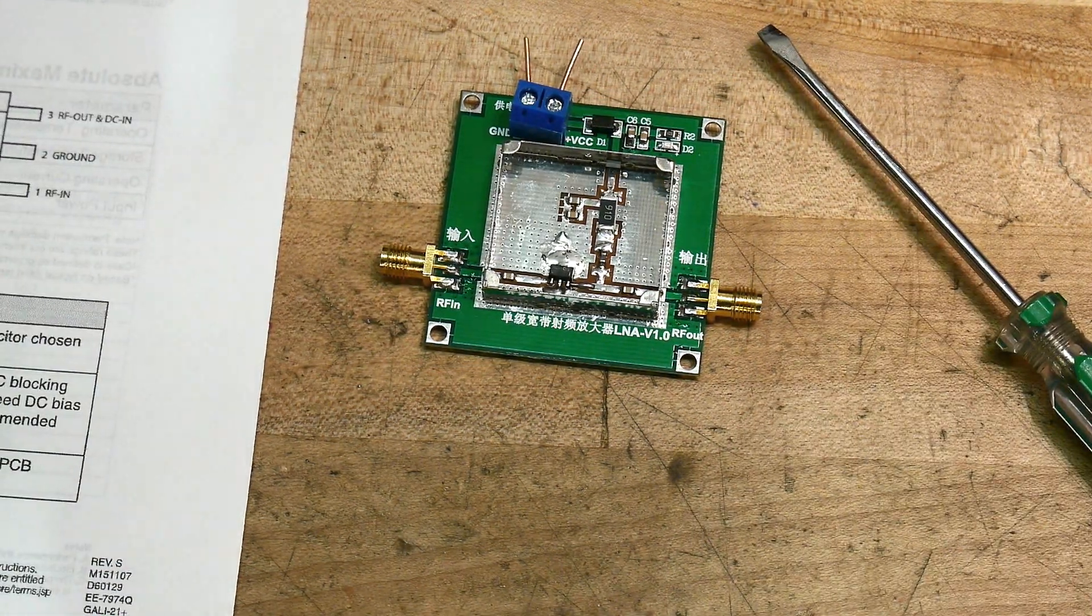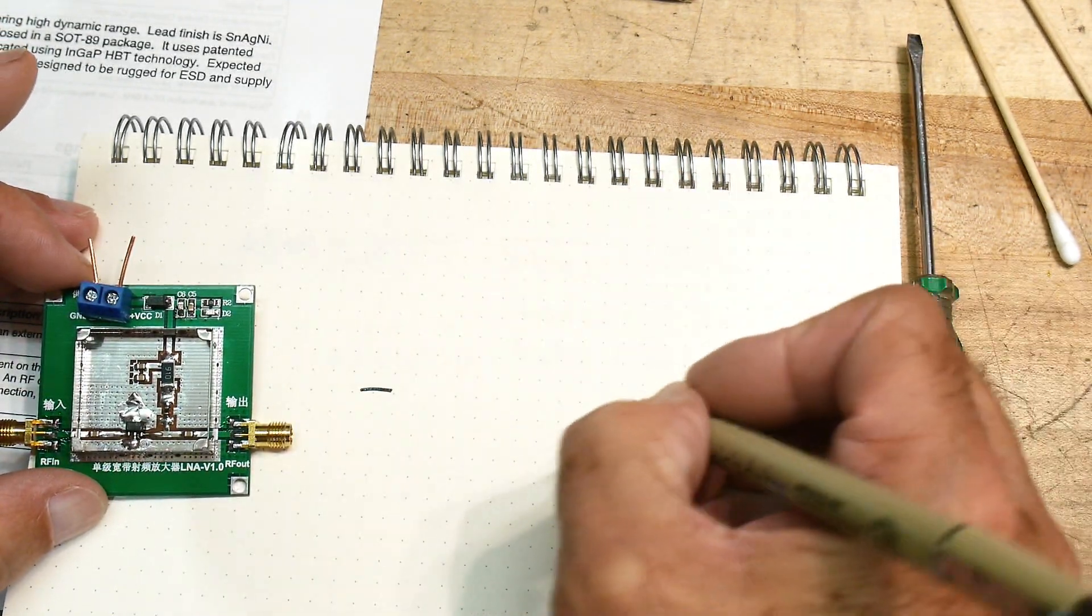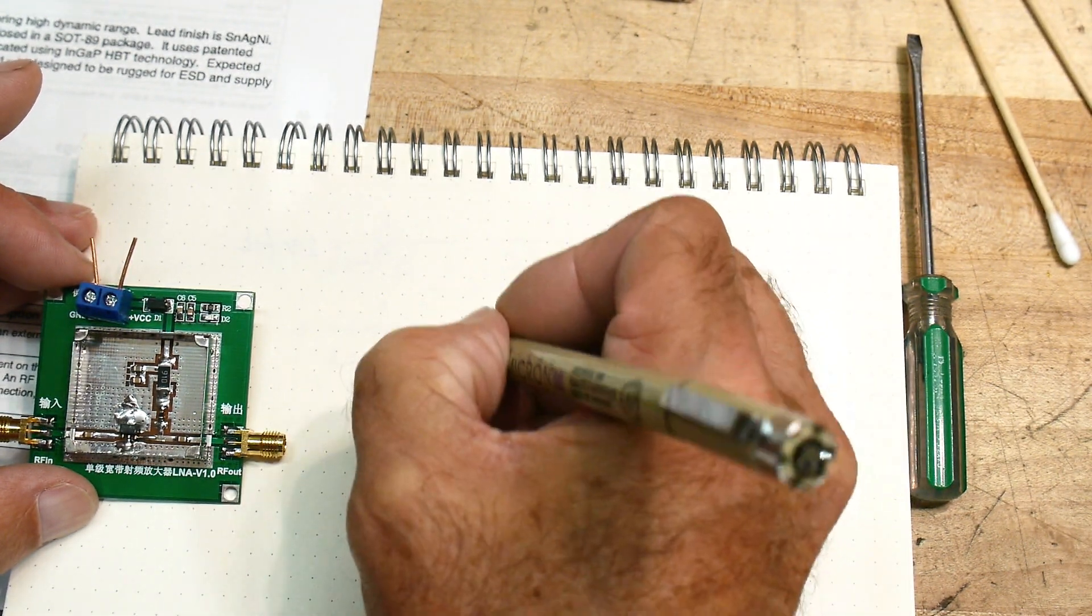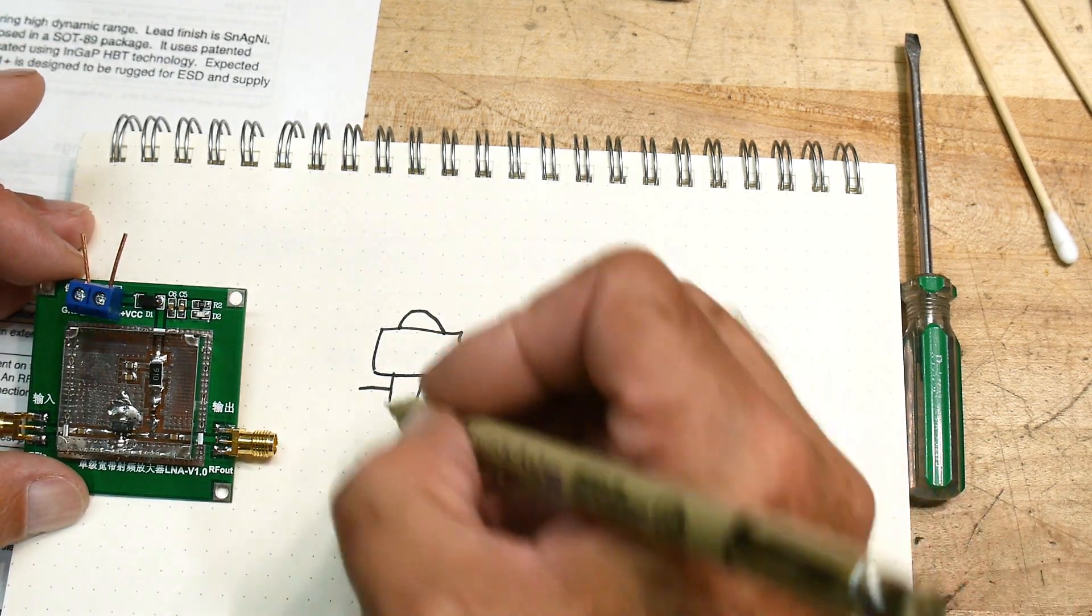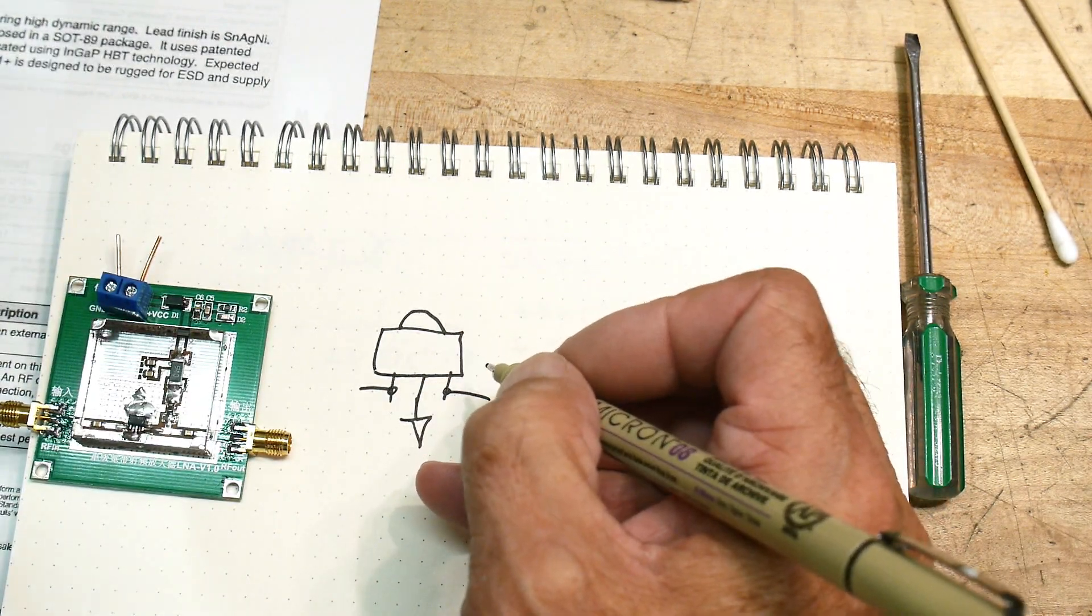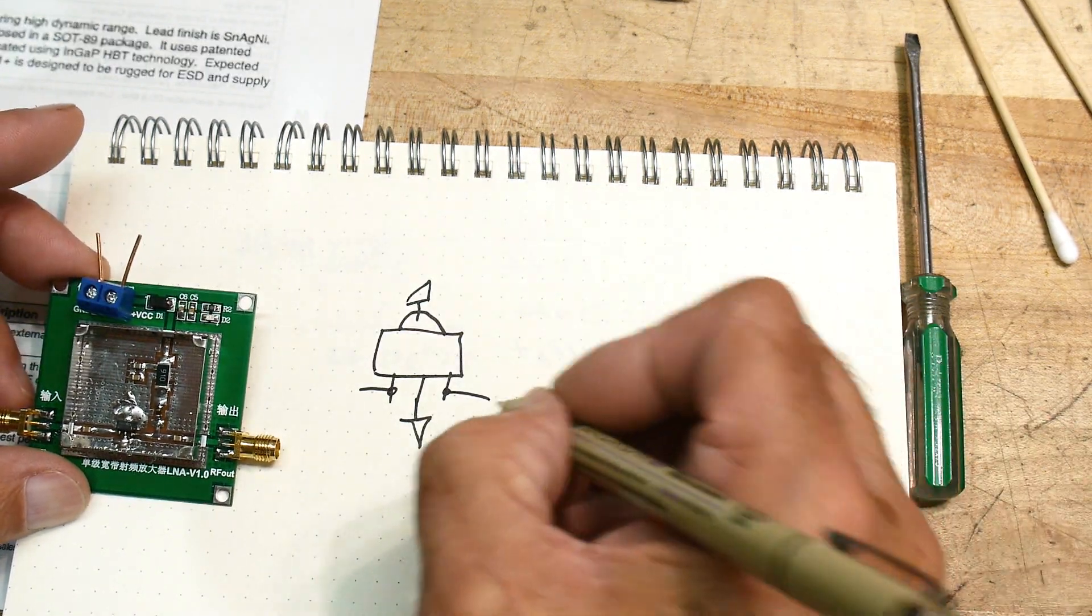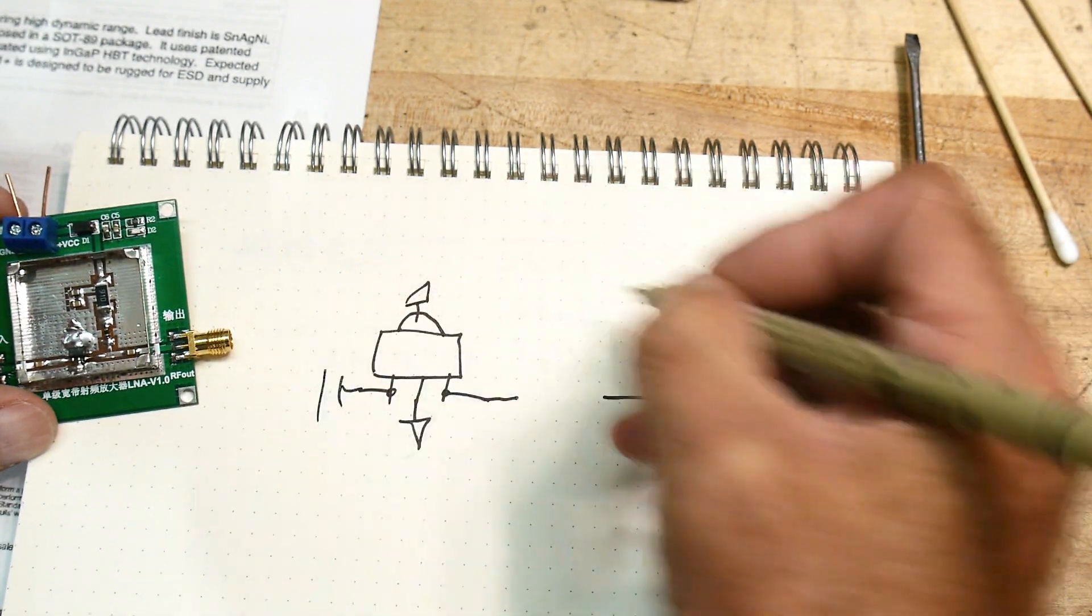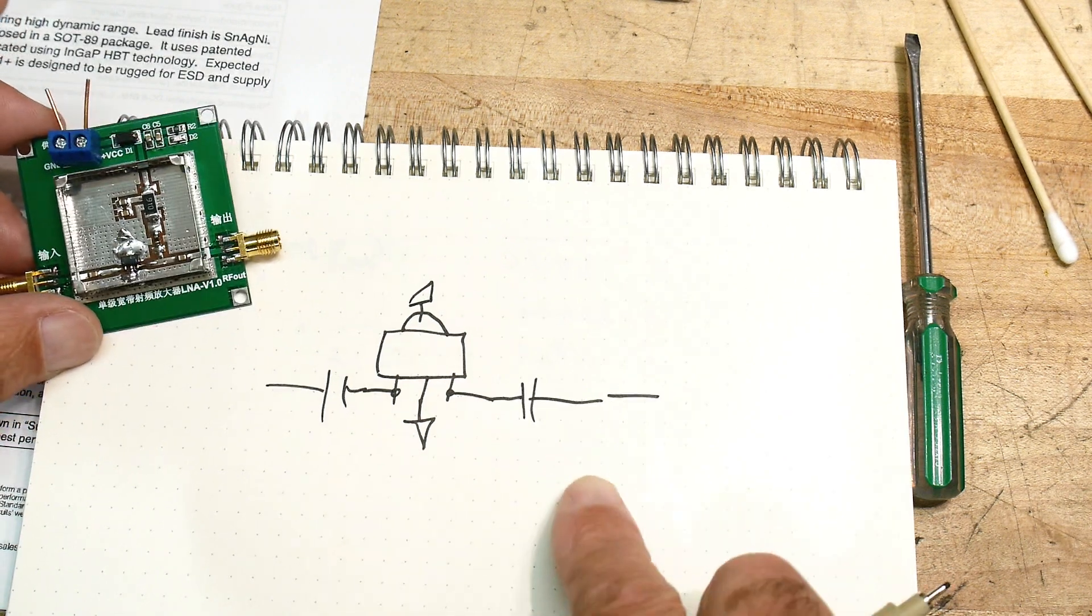Maybe we should draw a diagram. All right, so there's an in, and there's an out, and then there's a thing that looks sort of like this, got a power tab on it, that's the amplifier. This is ground, and this is in, and this is out, and the tab is ground, and then this comes over, and this comes over, there's a capacitor here and a capacitor here. So capacitively coupled in, capacitively coupled out.